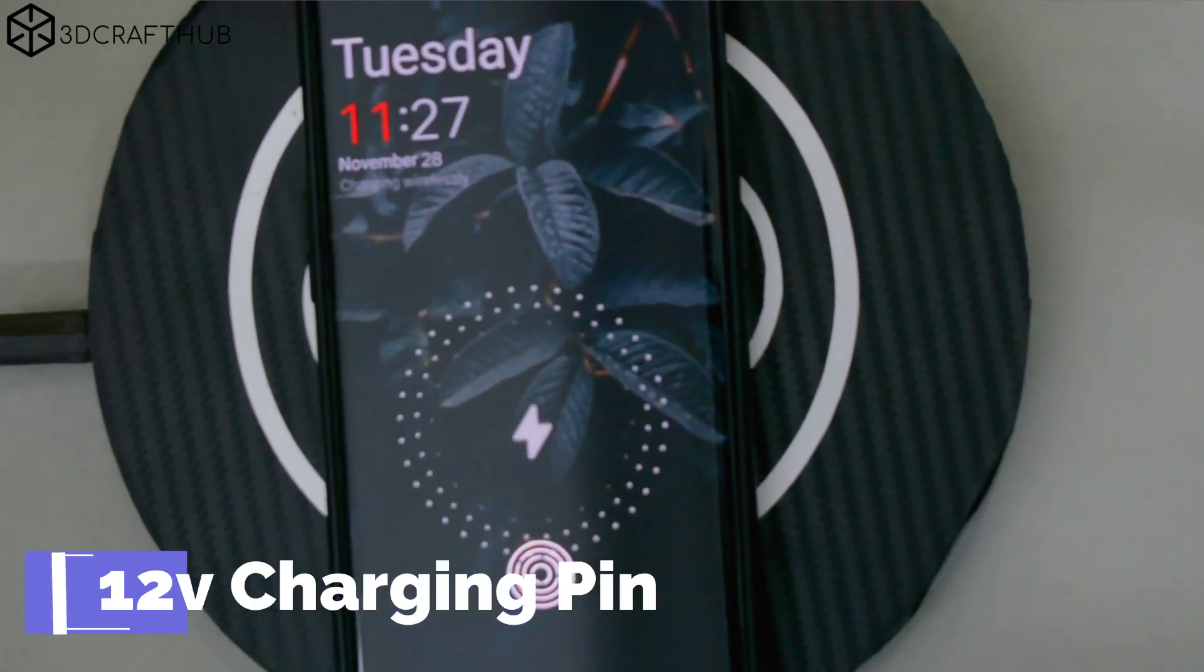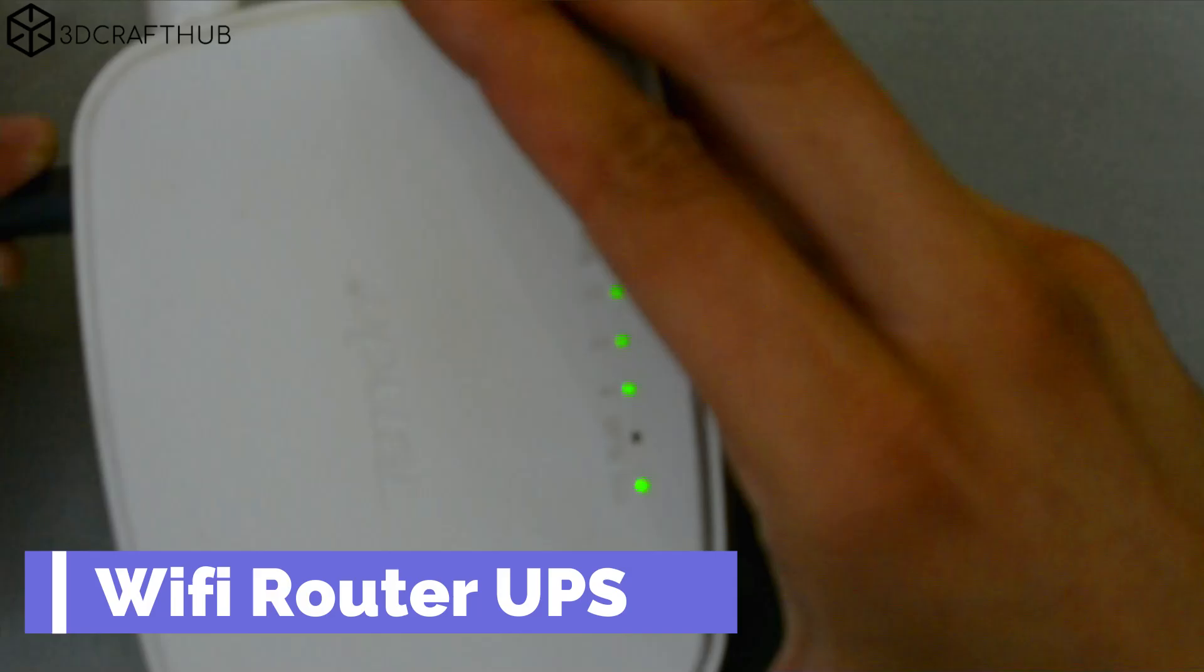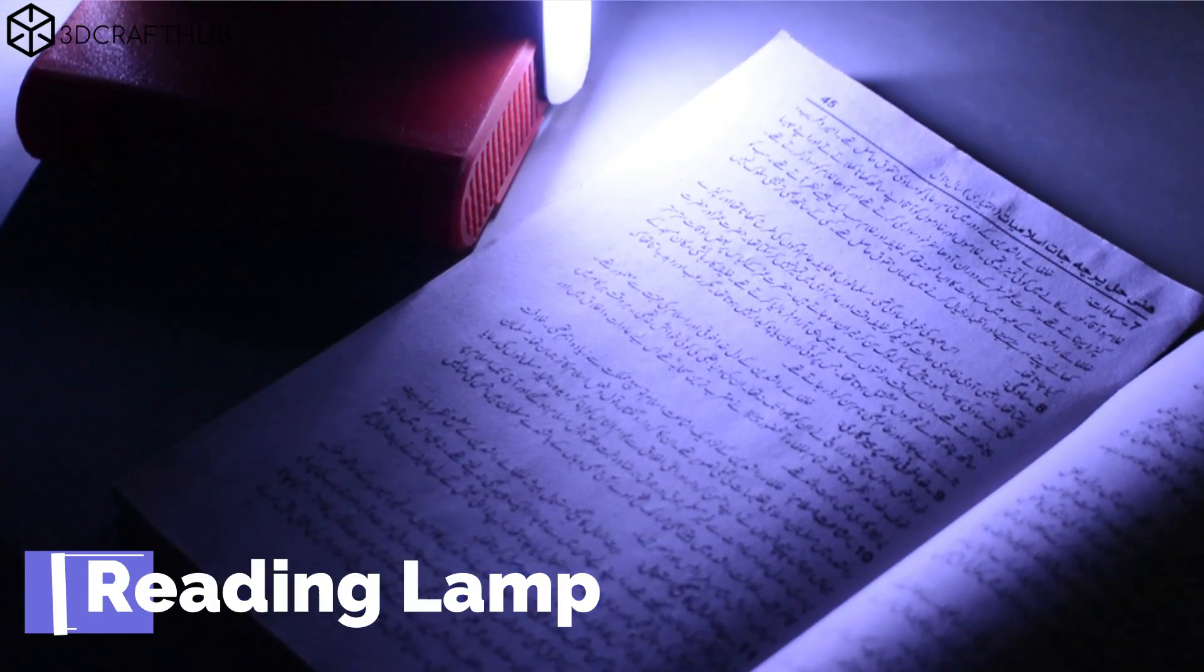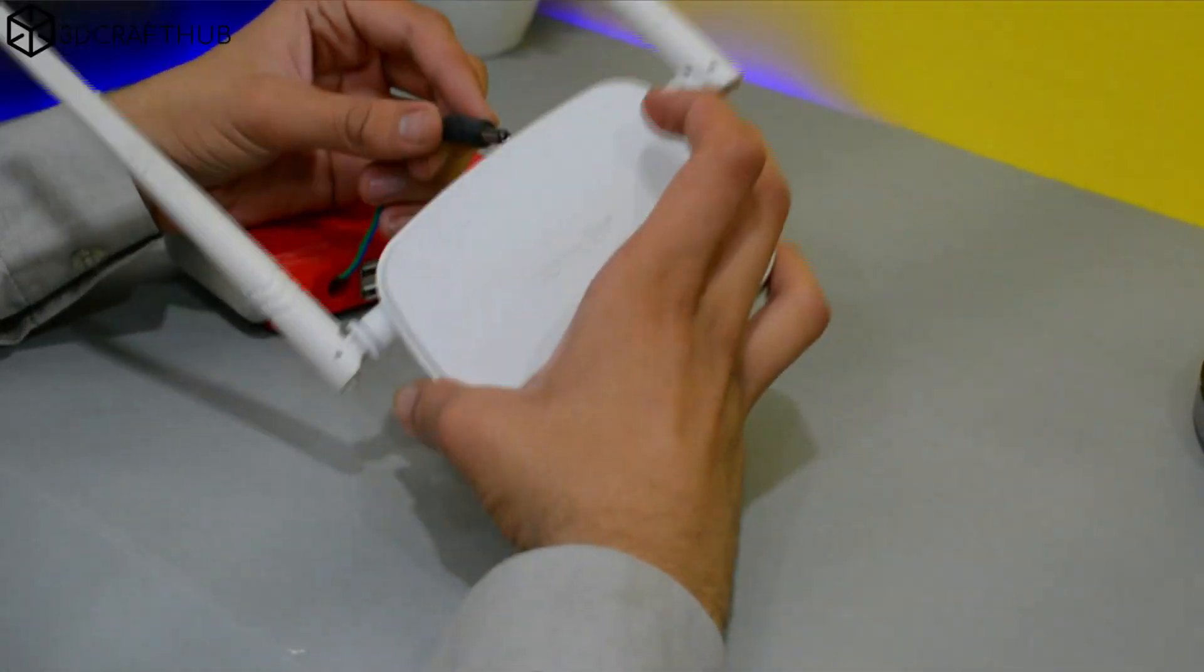But here's the killer feature. It's a UPS for your Wi-Fi router. Never get kicked out of a game or a video call again. From a reading lamp to an emergency power source, this little red box does it all. A truly versatile DIY gadget.